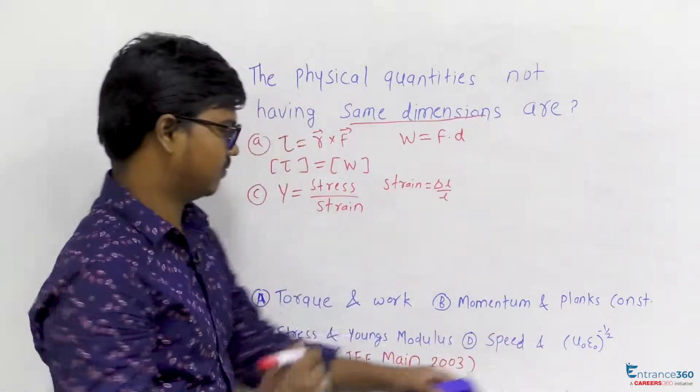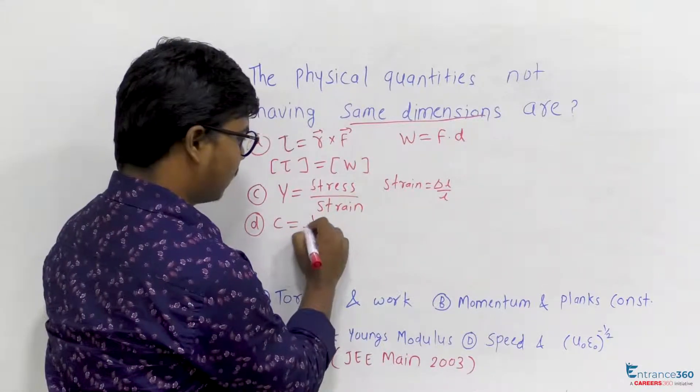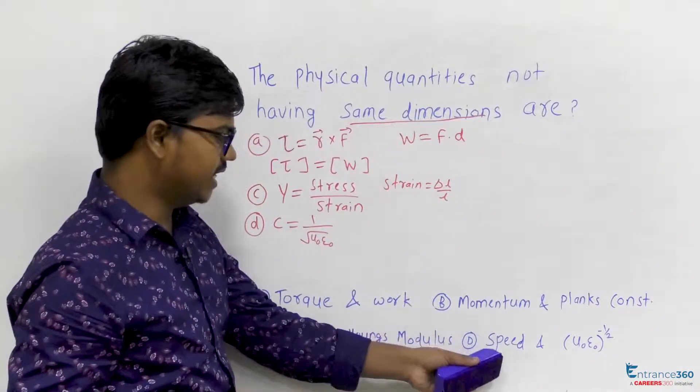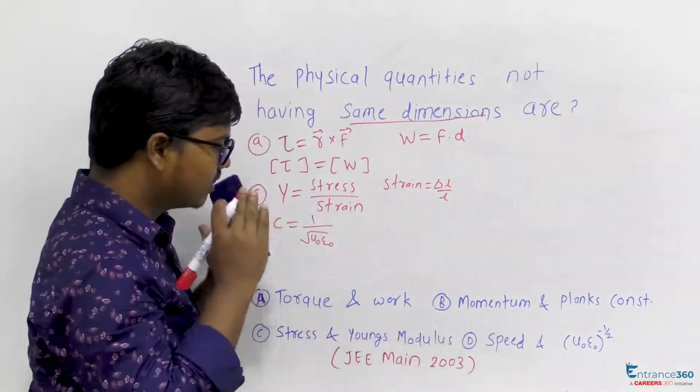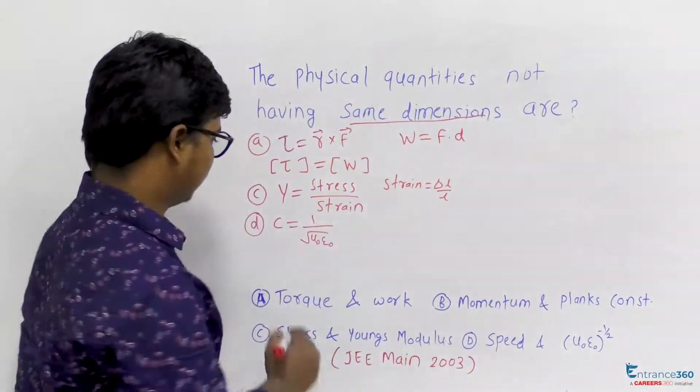We know that speed is related to option C, which is given as 1 upon under root μ₀ε₀. So speed and this quantity would have same dimension. Now we are left with momentum and Planck constant.